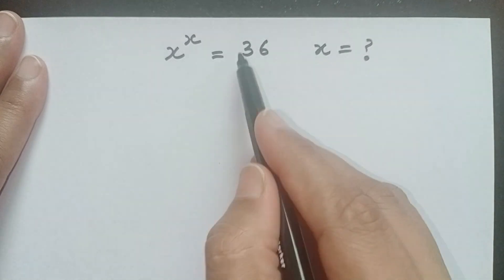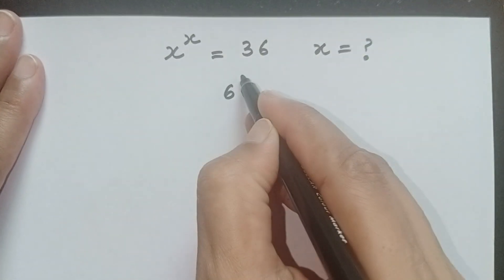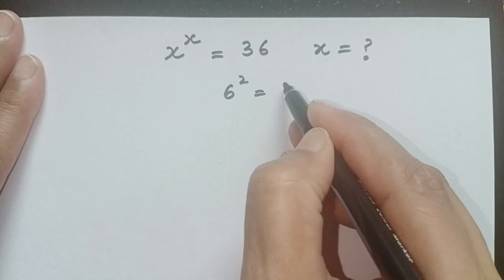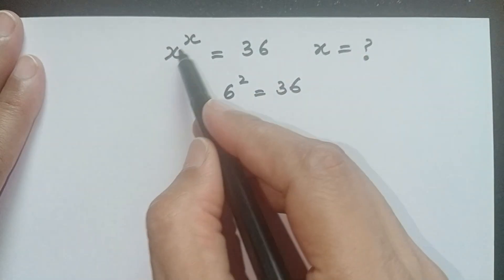To solve this problem, look at this 36. We know that we can write this as 6 power 2, which equals 36, but here these both are different. We need the same value.